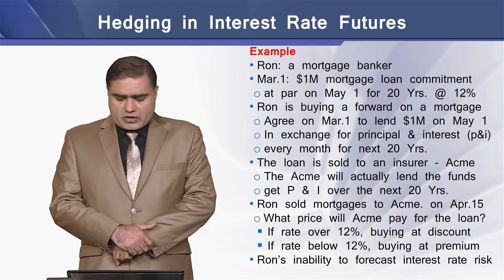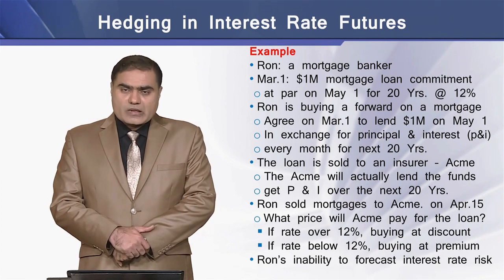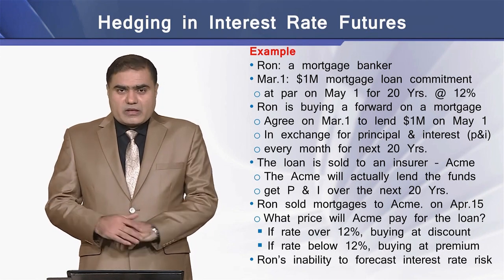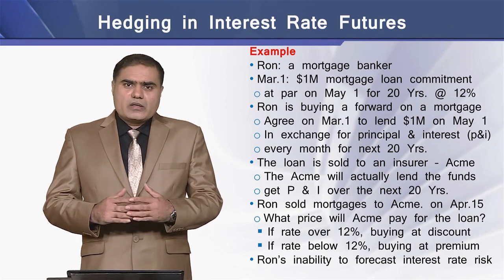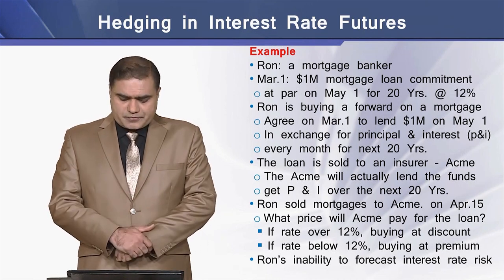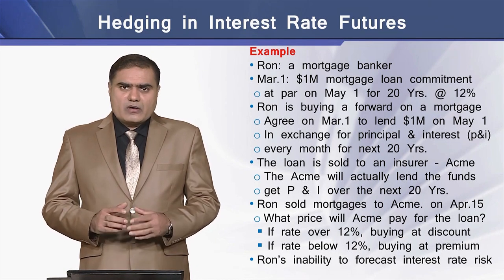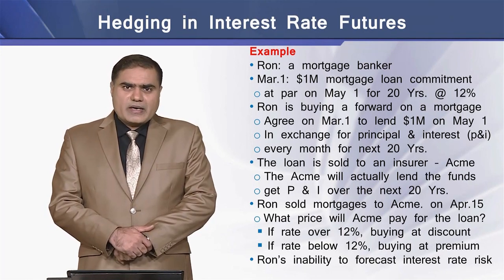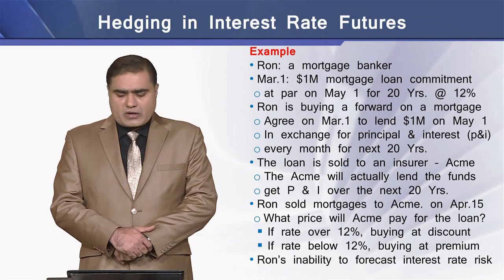This loan is sold to an insurance company named Aceman. Aceman will actually be paying the funds to the borrowers, meaning it is Aceman that is lending money to the home borrowers. Aceman will be receiving principal and interest payments on this lending for the next 20 years. So Ron has sold the mortgages to Aceman on April 15.